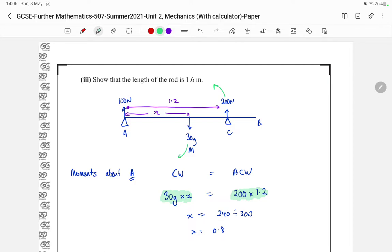And solving that equation, 30g, that's just 300. So we'll do 200 times 1.2 and divide that by 300. That gives us a distance X of 0.8.